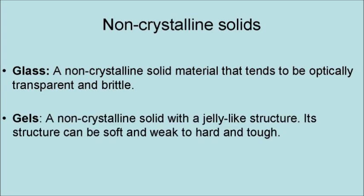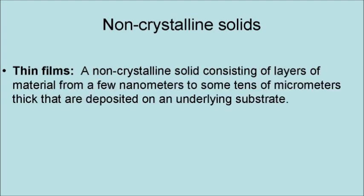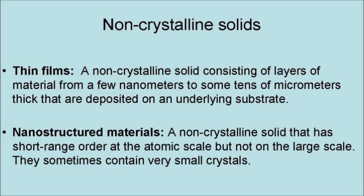A gel is a non-crystalline solid with a jelly-like structure. This structure can be anywhere from soft and weak to hard and tough. A thin film is a non-crystalline solid consisting of layers of material ranging from a few nanometers to some tens of micrometers thick that are deposited on an underlying substrate. A nanostructured material is a non-crystalline solid that has short-range order at the atomic scale but not on the large scale, and they sometimes contain very small crystals.